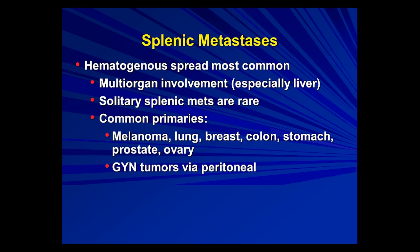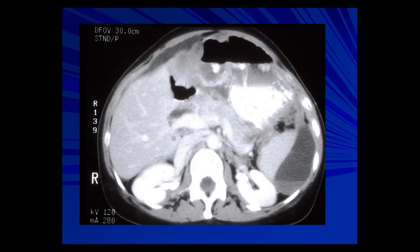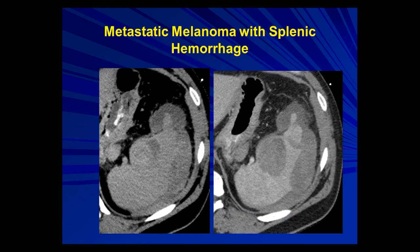Metastases are usually hematogenous but can also be implants on the surface of the spleen in patients with intraperitoneal disease. Hematogenous spread usually involves the liver, so it would be unusual to see splenic involvement without liver involvement. Common primaries include lung, breast, colon, stomach, prostate, and ovary, with gynecologic tumors spreading via peritoneal dissemination. Here's a gynecologic tumor implanting on the surface of the spleen, going through the capsule. Some peritoneal implants from melanoma can push far into the spleen, almost looking like hematogenous spread.